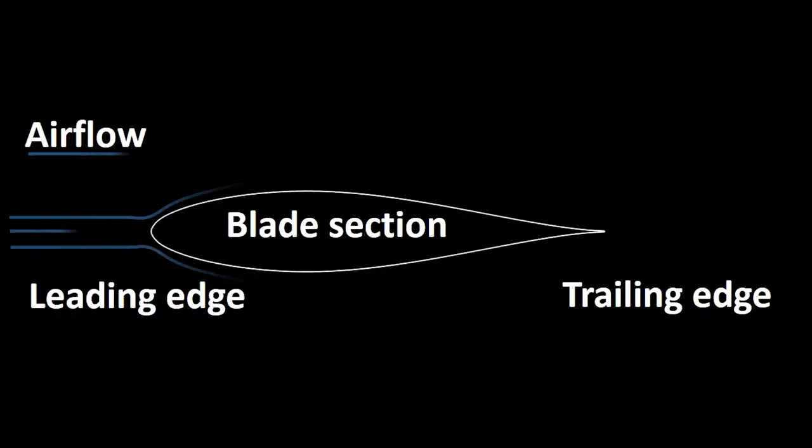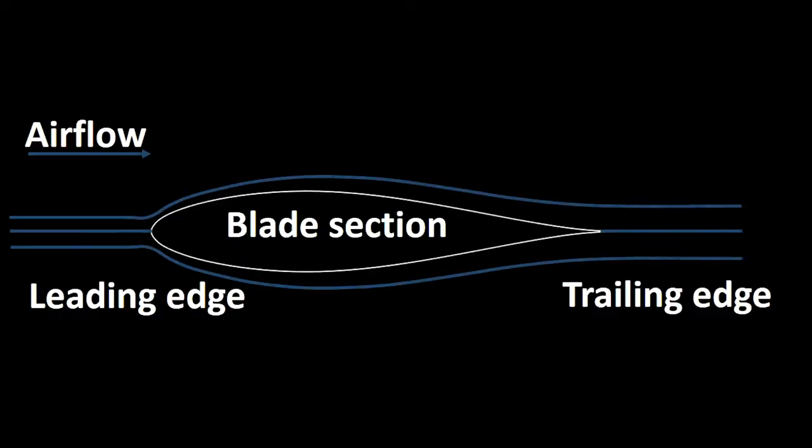Part of the noise generated in a wind turbine is actually related to the way the air flows close to the blades. As the air passes through a section of the blade, a thin layer of lower speed flow is formed that defines a transition between the airspeed away from the blade and the blade surface. This transition region is called the boundary layer.